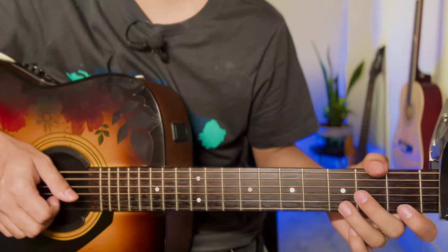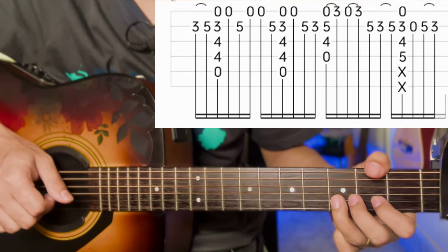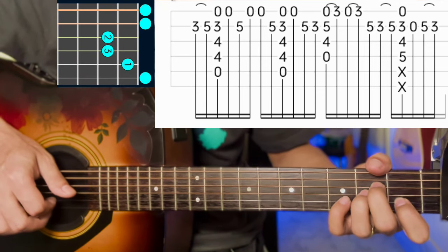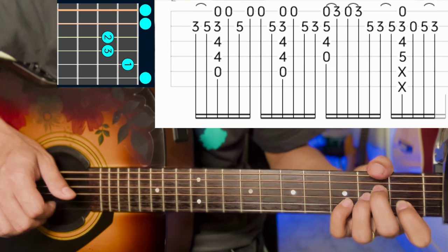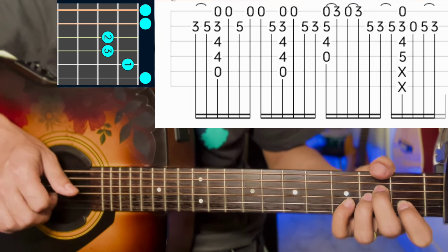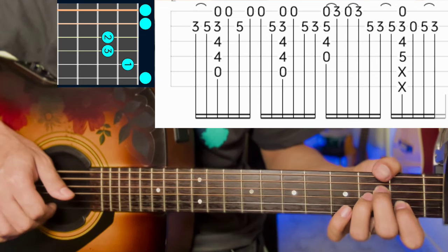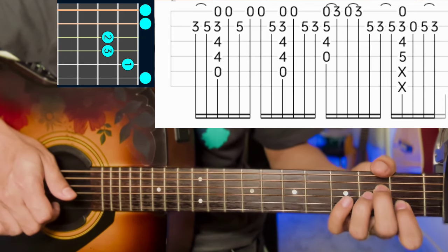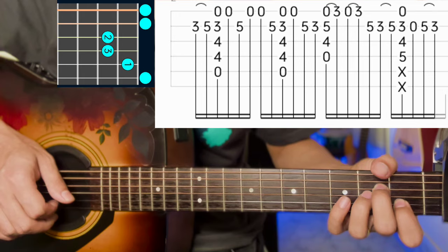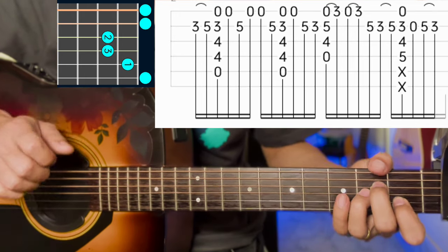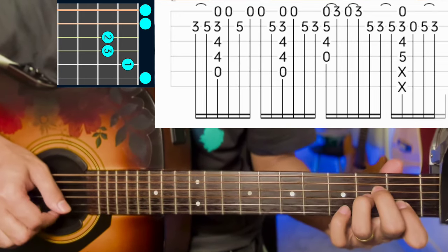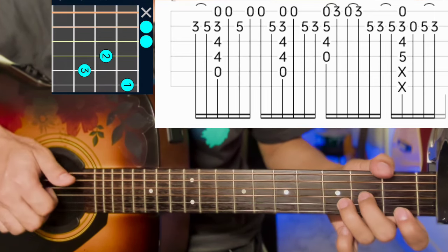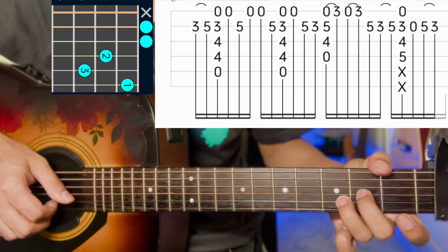Second string: 3, 5 with hammer on for E minor. Single strum, second string at 5. Foster string open, second string at 5. Continue with second string at 3, then go to E minor, then first string of E minor.